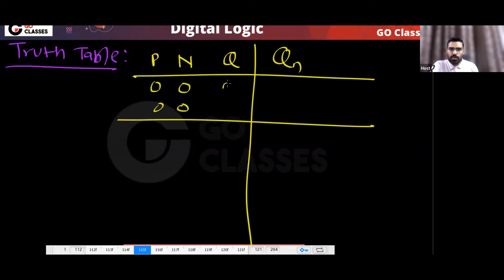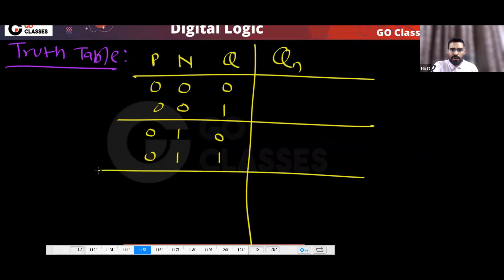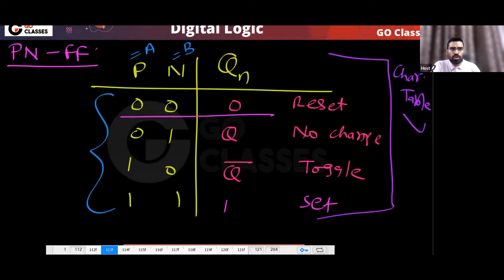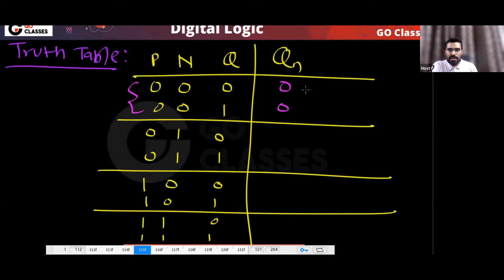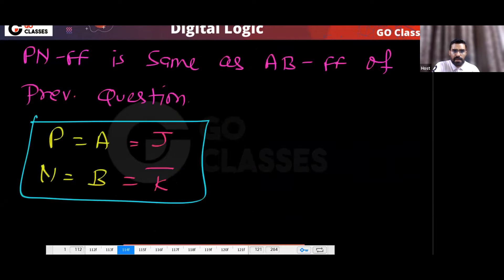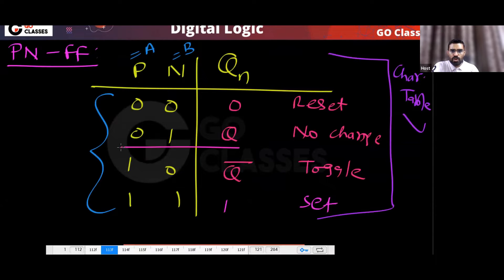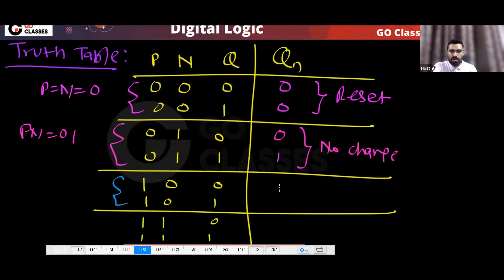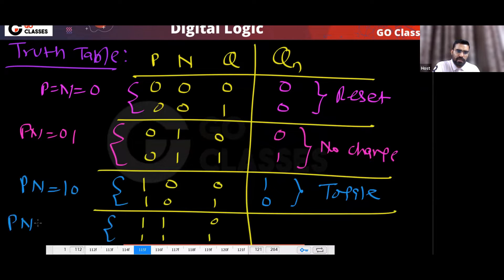In the PN flip-flop truth table: when P-N is 0-0, this is reset, so Q_next = 0. When P-N is 0-1, then no change — Q_next stays the same. When P-N is 1-0, then toggle — Q_next is complement of Q. And when P-N is 1-1, then set — Q_next = 1.